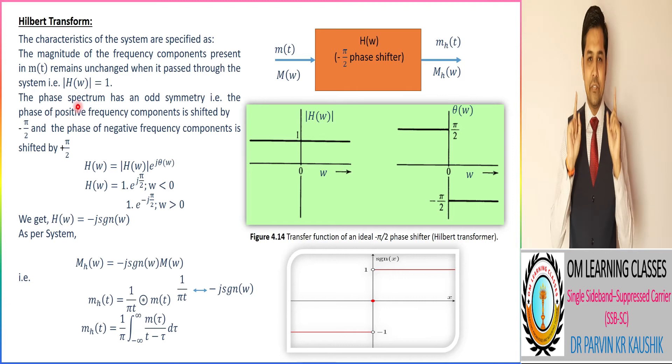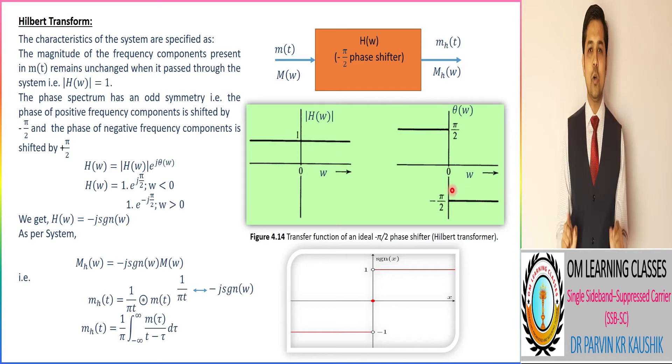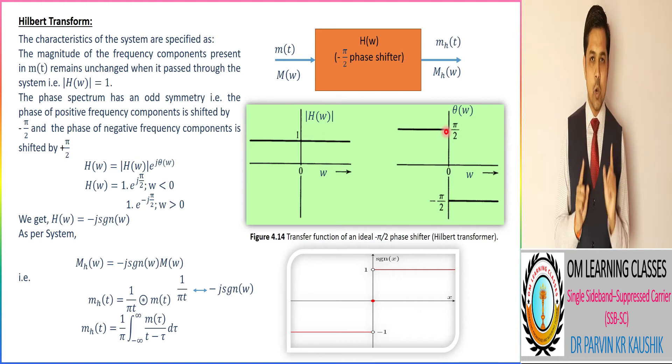The second: the phase spectrum has an odd symmetry, meaning the phase of positive frequency component is shifted by minus π by 2 or minus 90 degree, and the phase of negative frequency component is shifted by plus π by 2 or plus 90 degree.